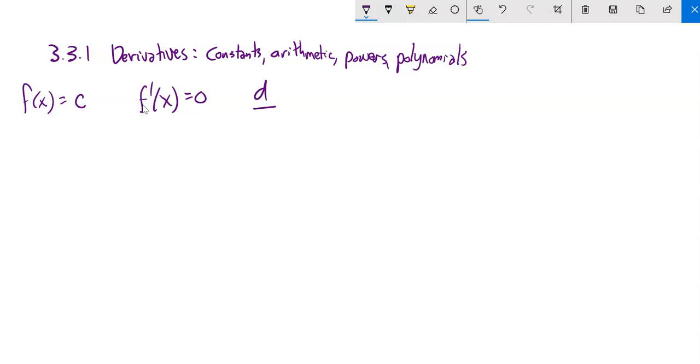If I think of this as the rate of change, it would be 0. This is true for any constant. If f of x is a constant, then the derivative is 0. Another way to say this is the derivative of some constant is 0.